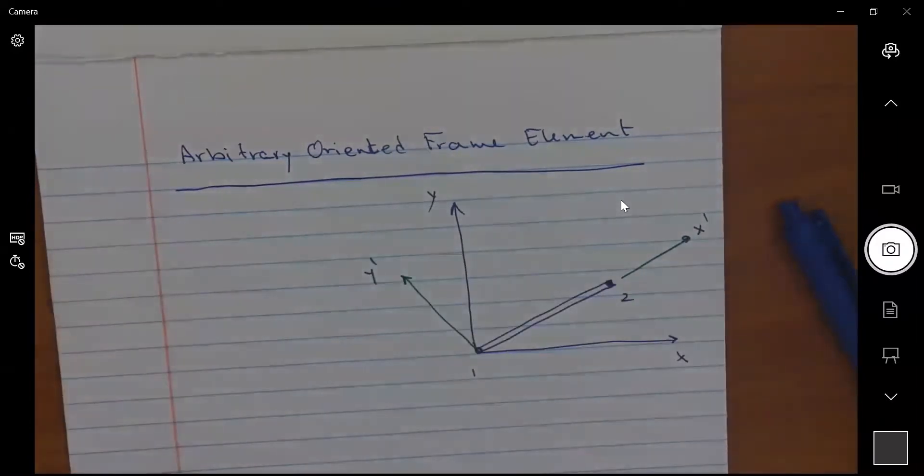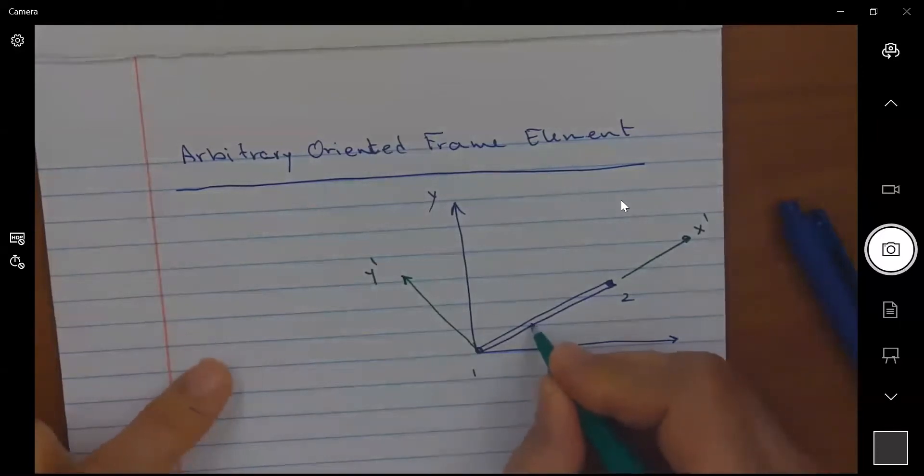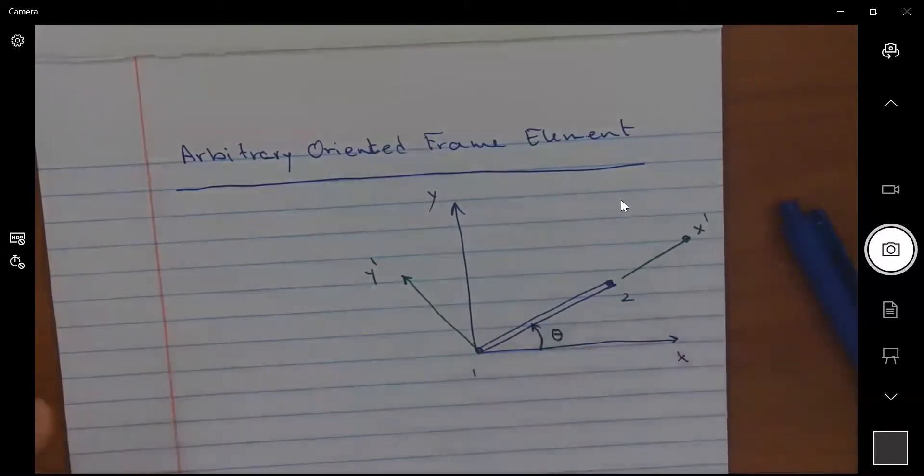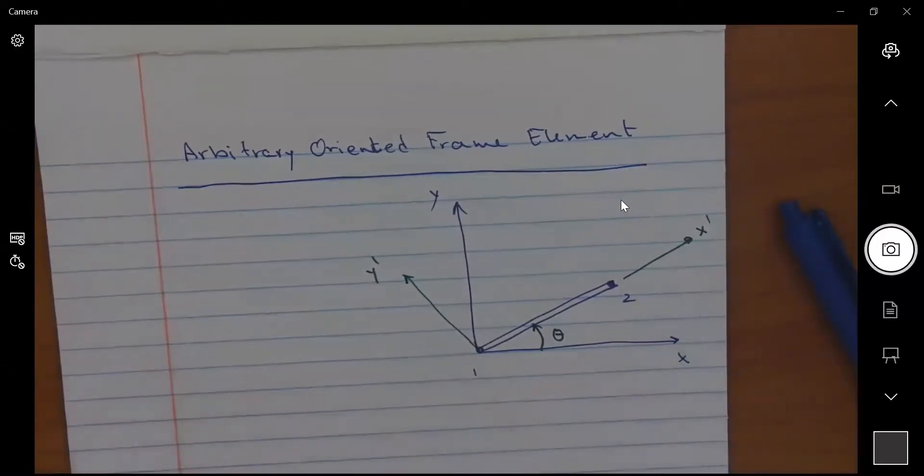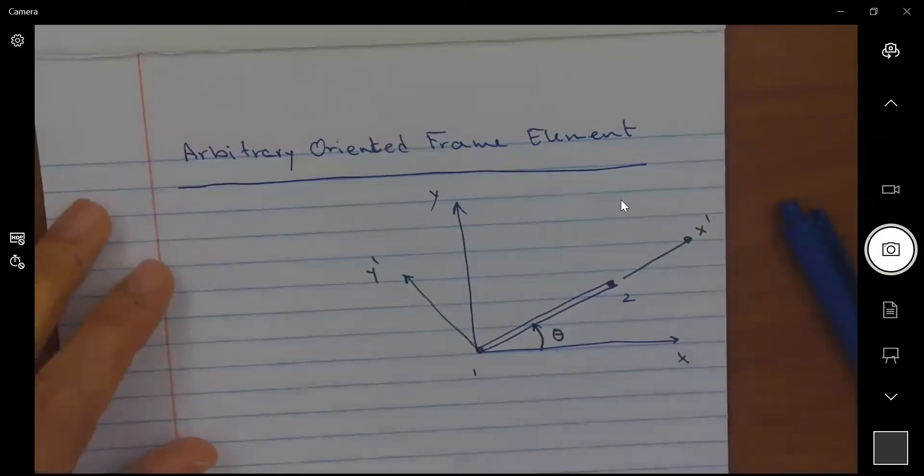So the element makes an angle theta, which is the angle between the x prime and x. So going from x to x prime, we go an angle theta.